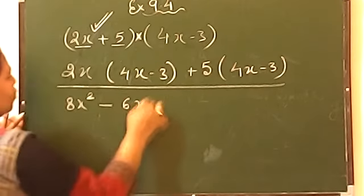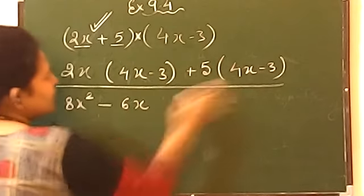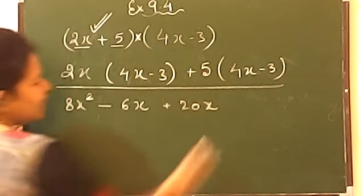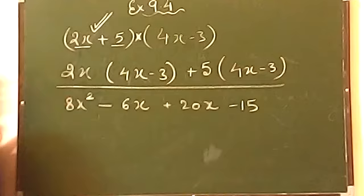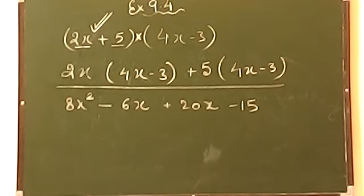2 into 3 which will give you 6x. This step will give you 20x. And last term will give you minus 15. This question is solved.